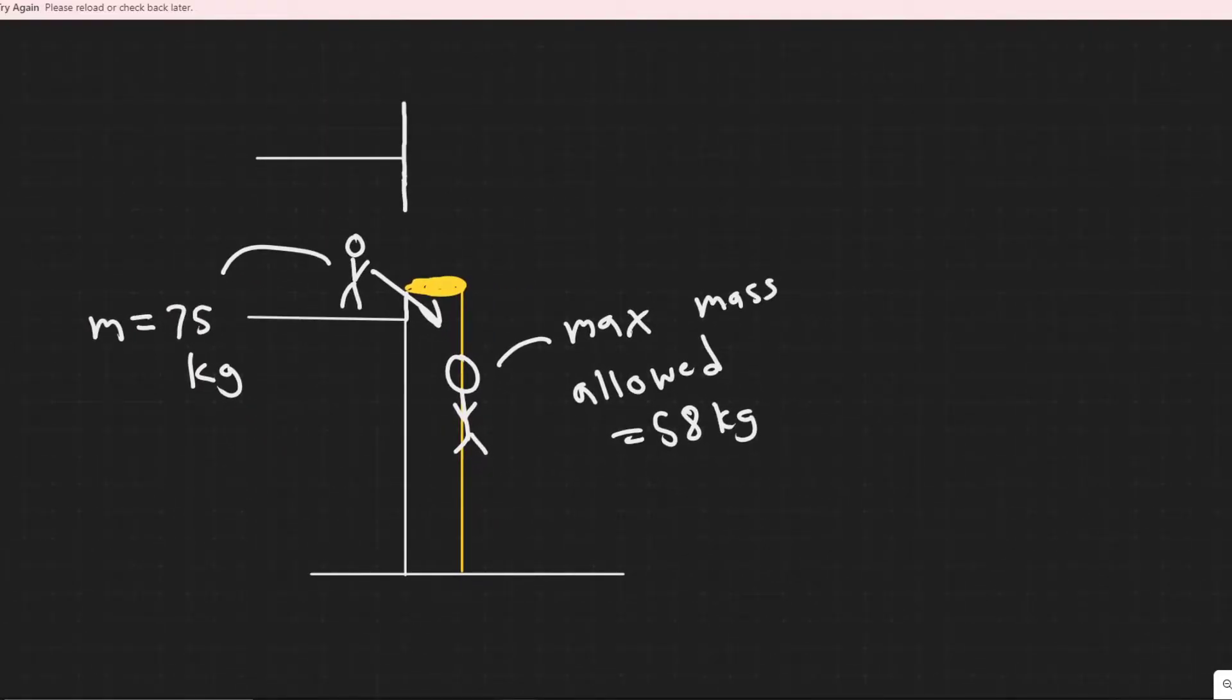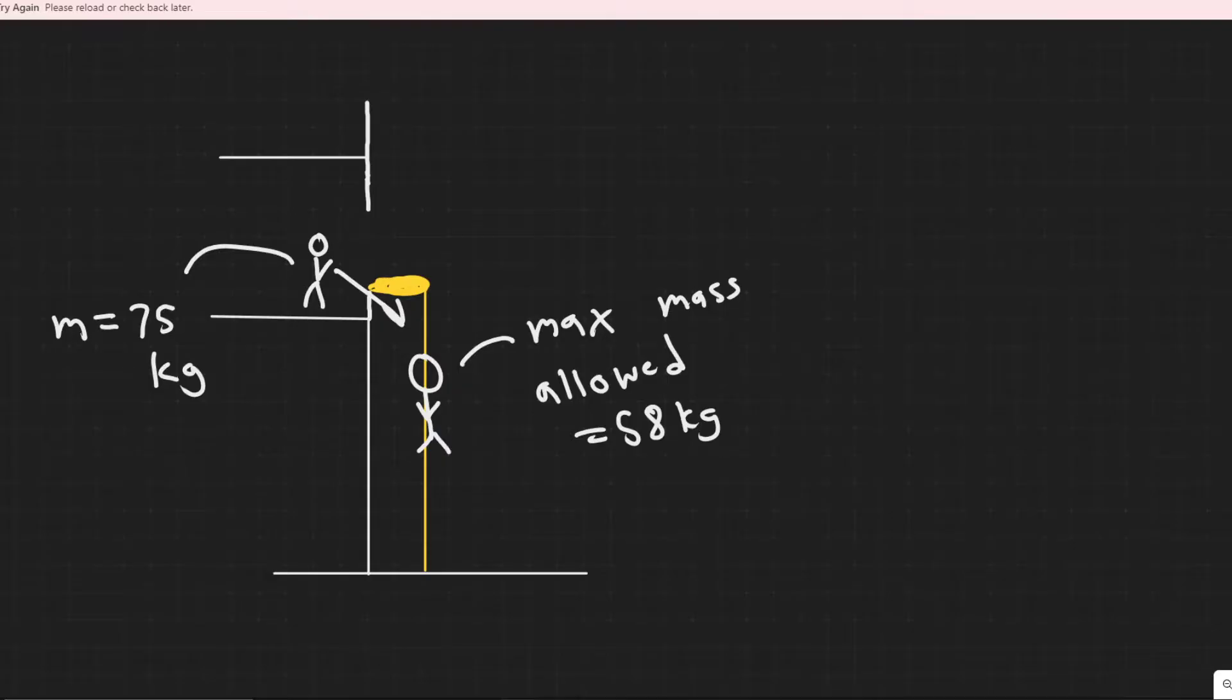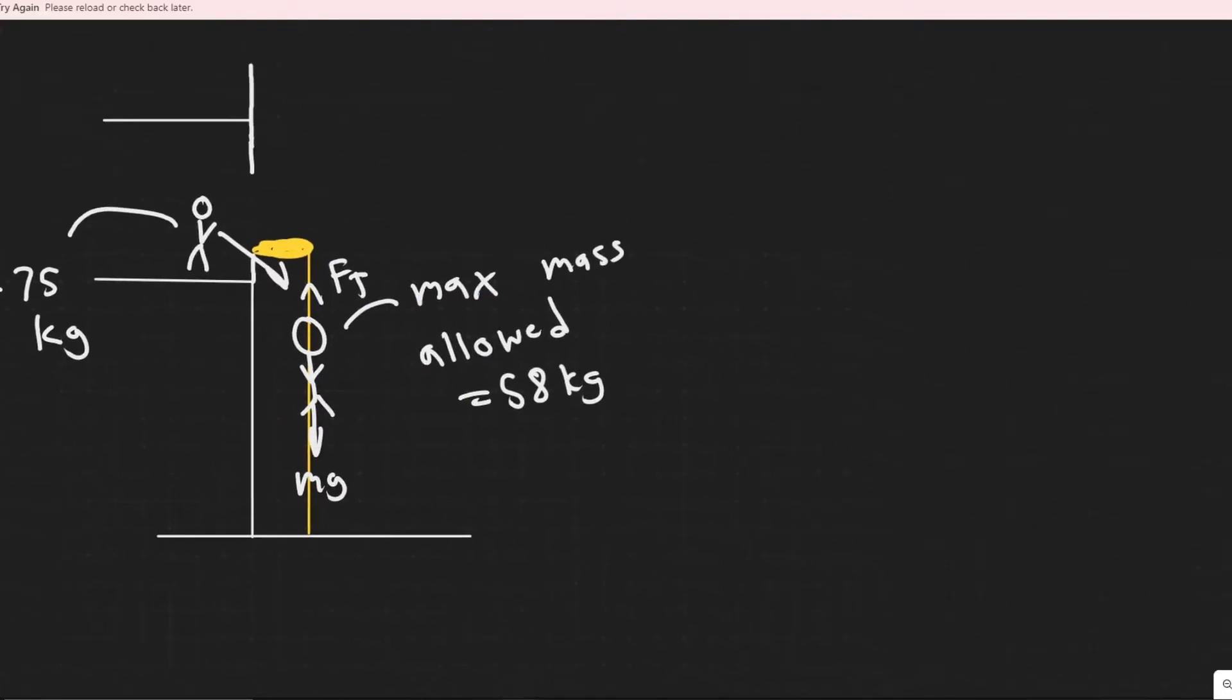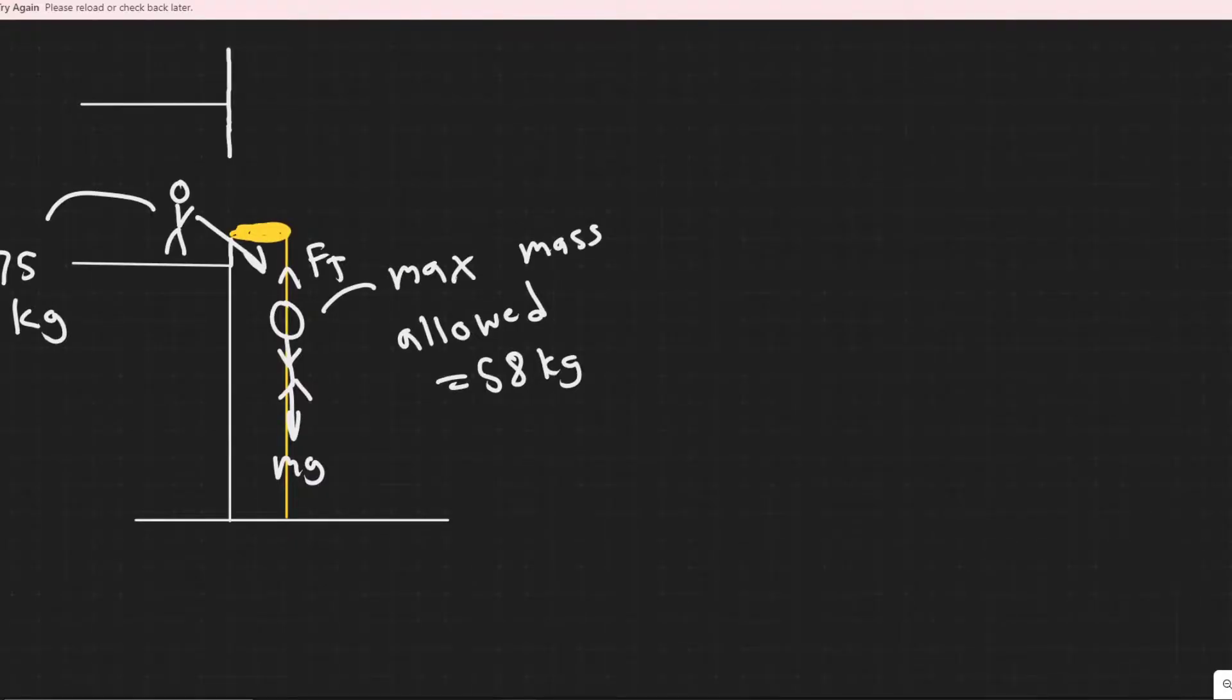So the first thing to understand is what is going to be the force in tension that this thing can allow? So what is the tension force that this thing can allow before it breaks? Because we know that there's going to be a force of tension going upwards in this rope that's going to be counteracting the force due to gravity.